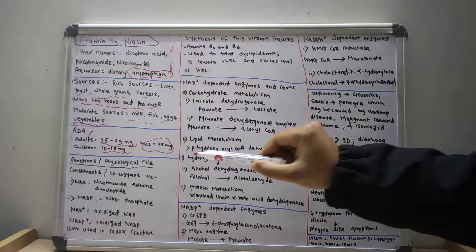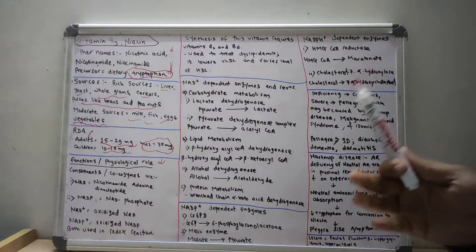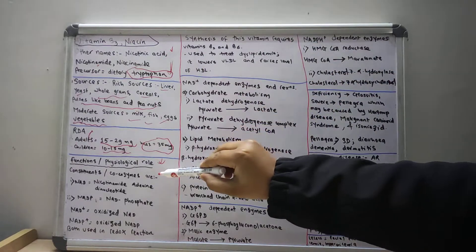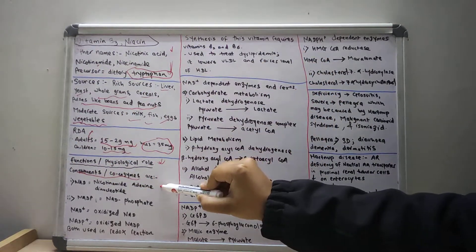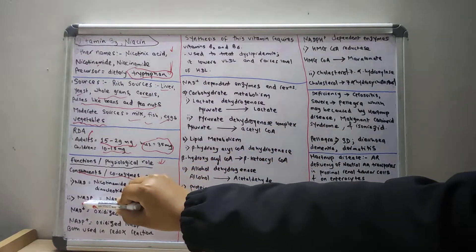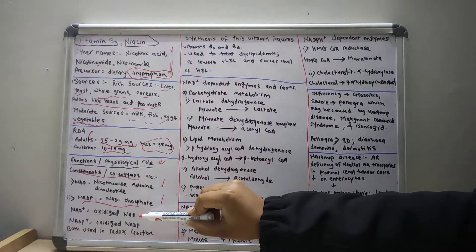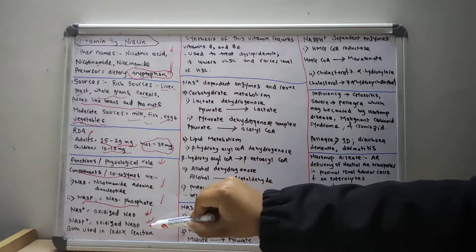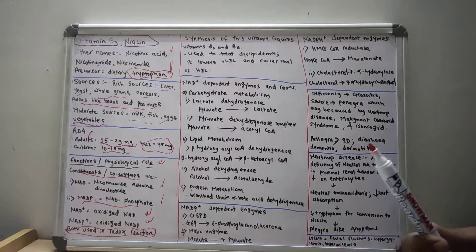Before discussing the physiological roles of vitamin B3, let us discuss its coenzymes. These are NAD and NADP. NAD stands for nicotinamide adenine dinucleotide and NADP is NAD phosphate. NAD plus is oxidized NAD and NADP plus is oxidized NADP. Both NAD and NADP are used in redox reactions — oxidation and reduction reactions.